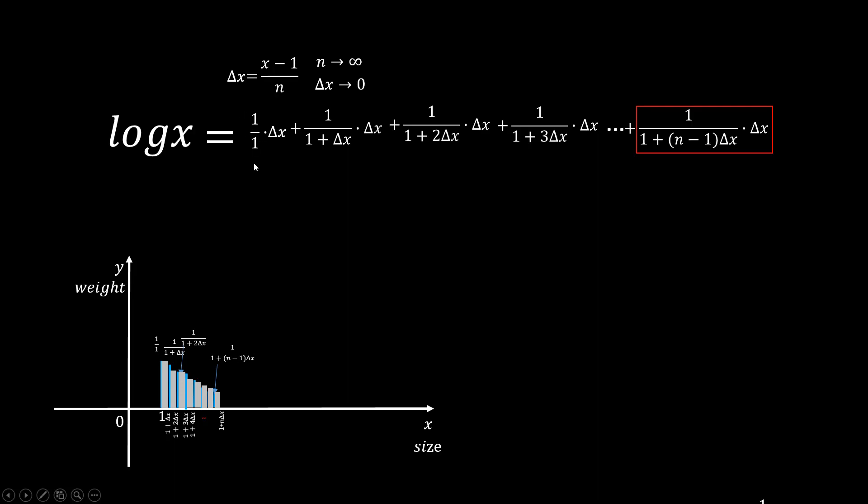Now, what will the area become then? Each bar will shrink to a line falling perfectly along a curve. So log X equals to the area of this curvy segment. The curve has a formula of the inverted size.